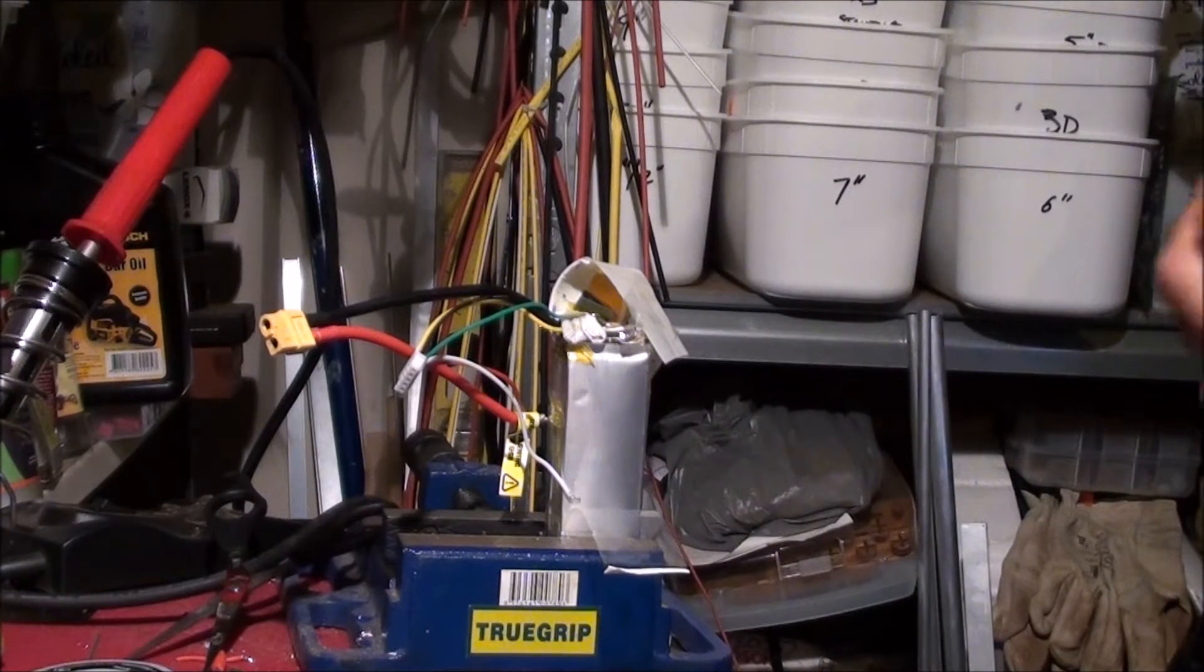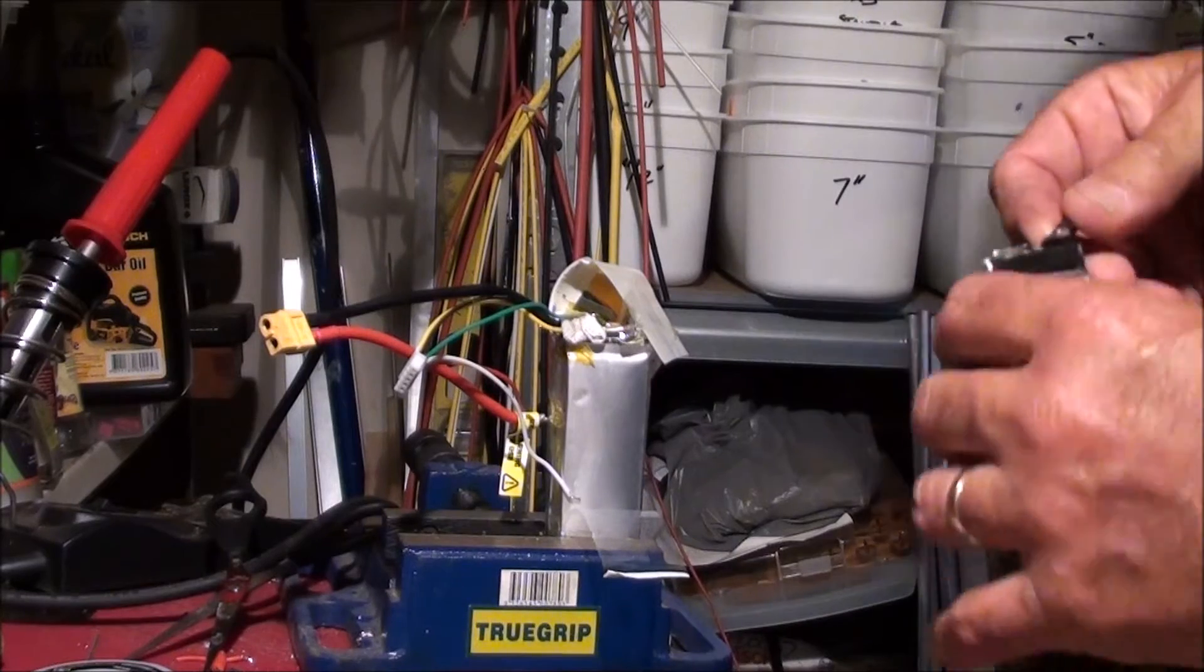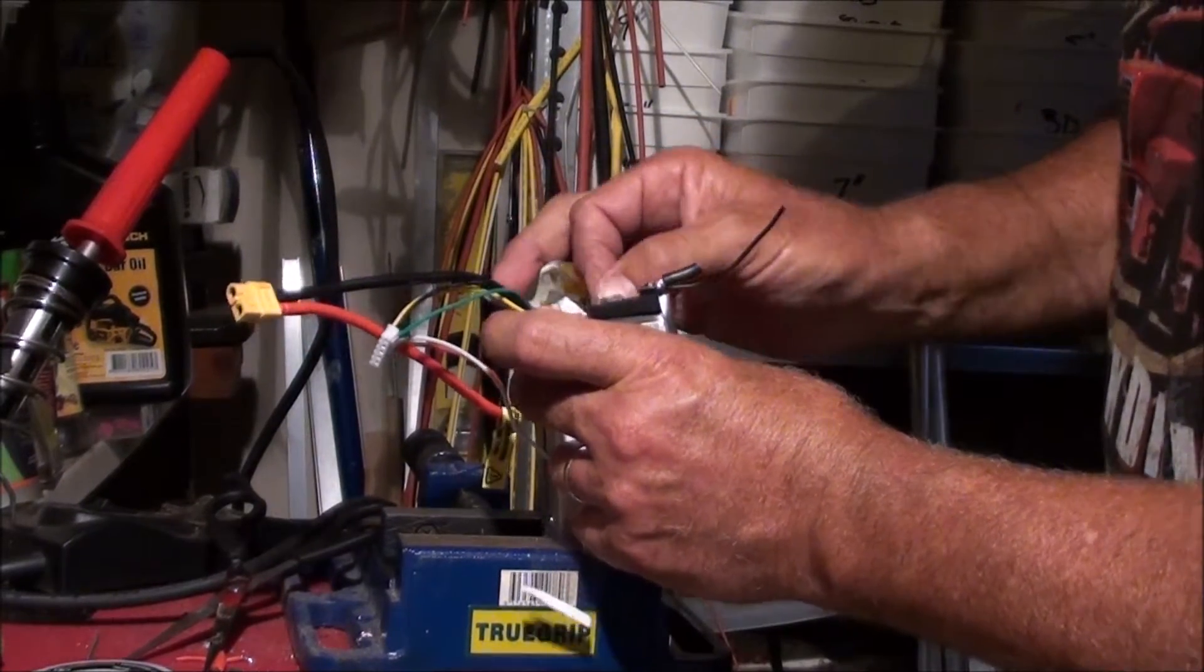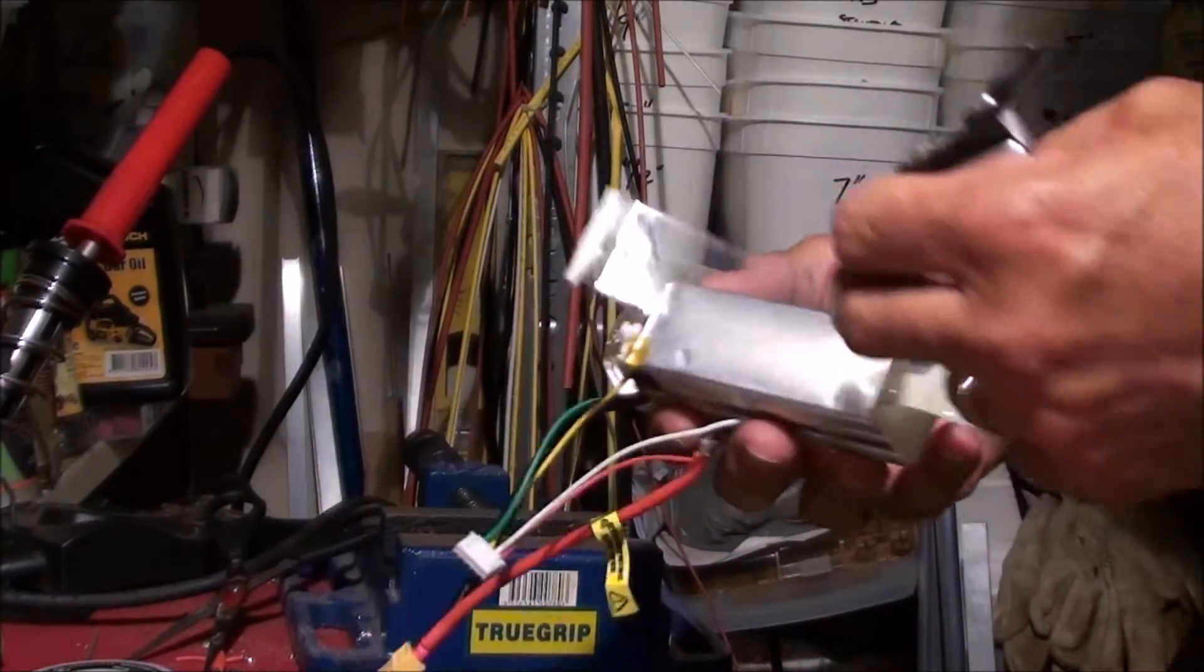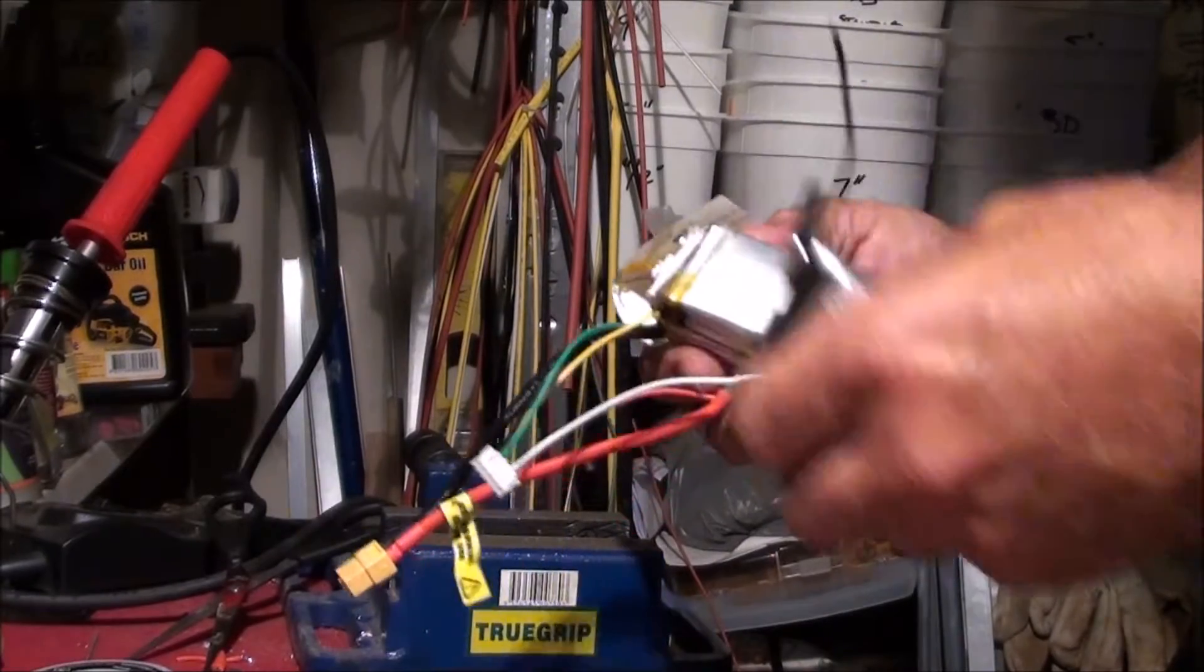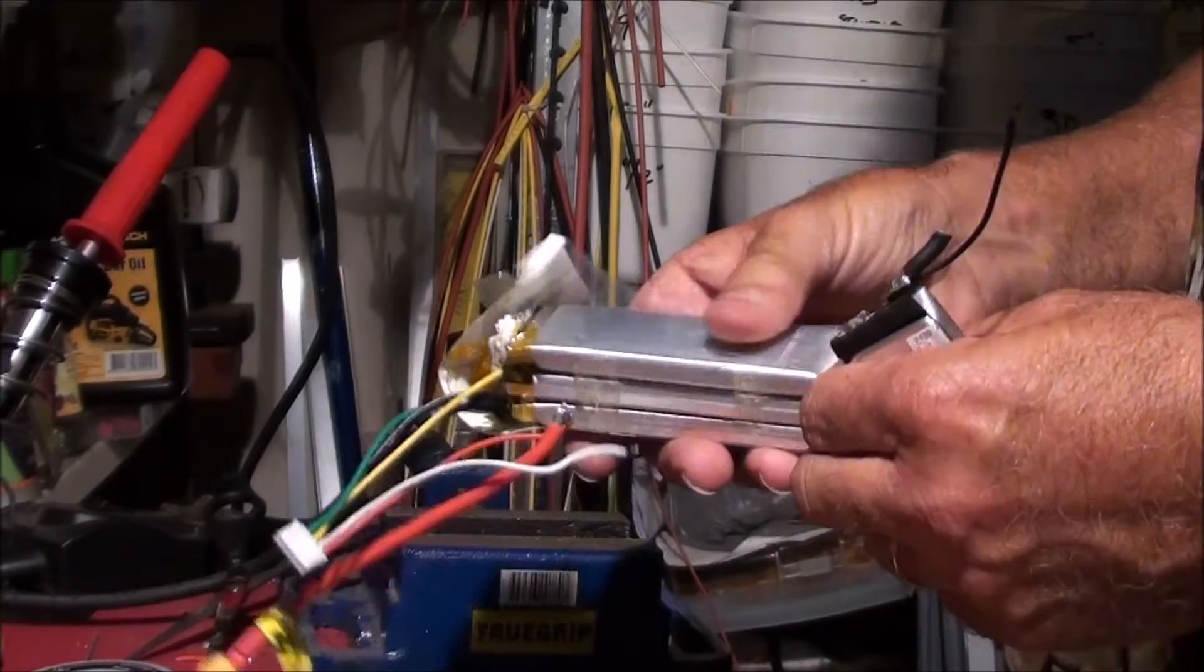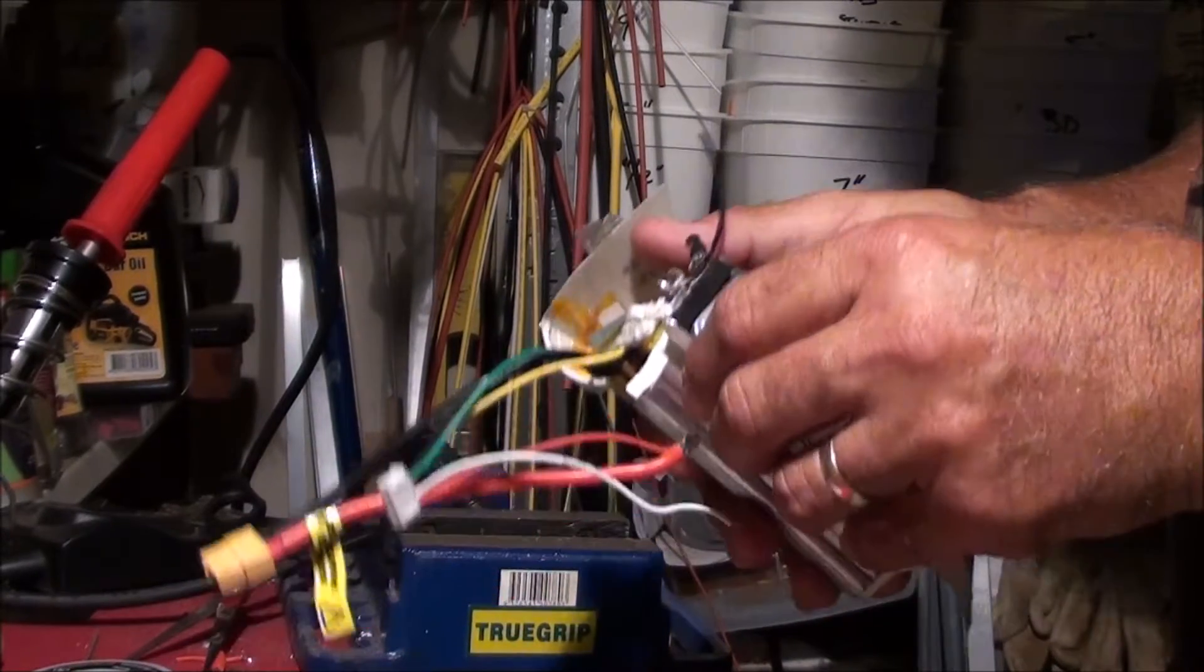Then what we do is we take one of our other cells that we've got. We've got a good one here. We'll just pull that out. Now they've got to match. You can't just put any old cell. These are all heavy-duty four-cell Turnigy 2200 four-cells.